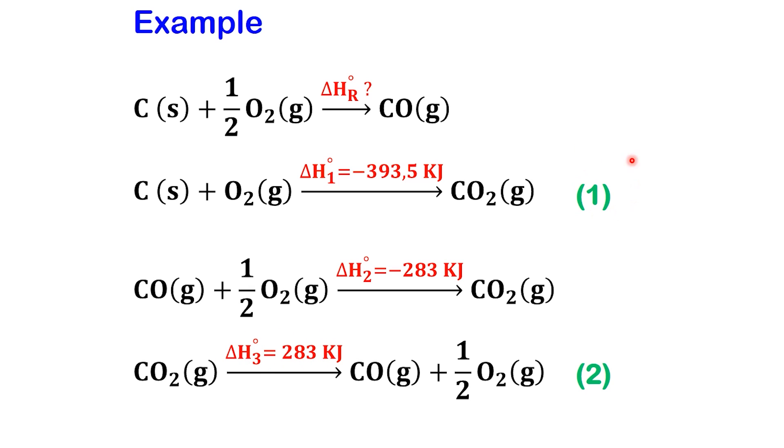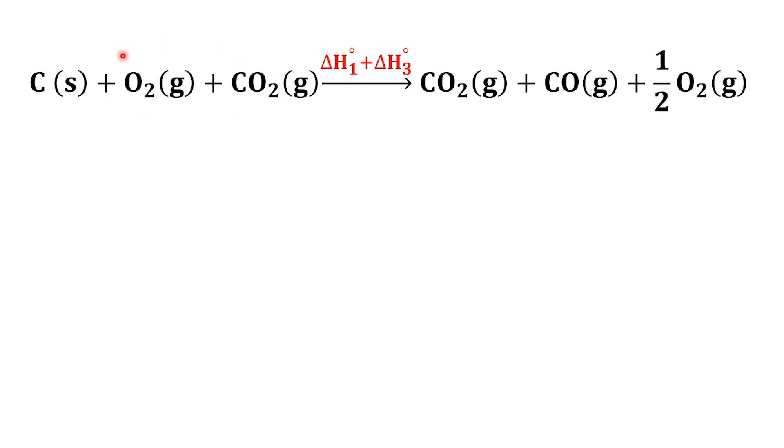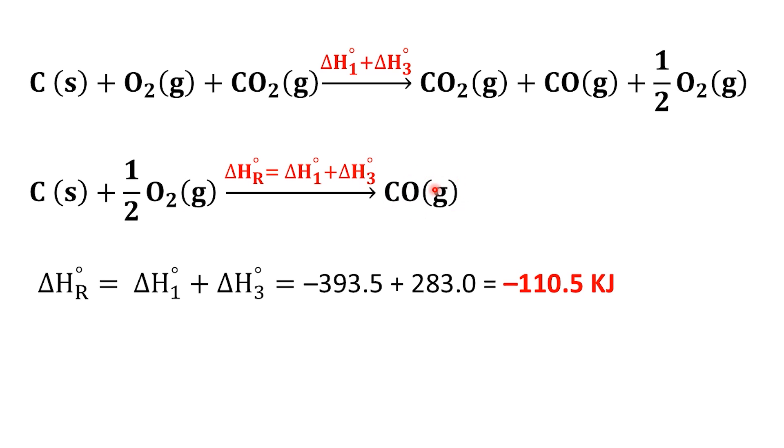Now, we add the two reactions together. The carbon dioxide cancels out and we're left with carbon plus half O2 gives CO. As for the energy, negative 393.5 plus 283 equals negative 110.5 kJ.